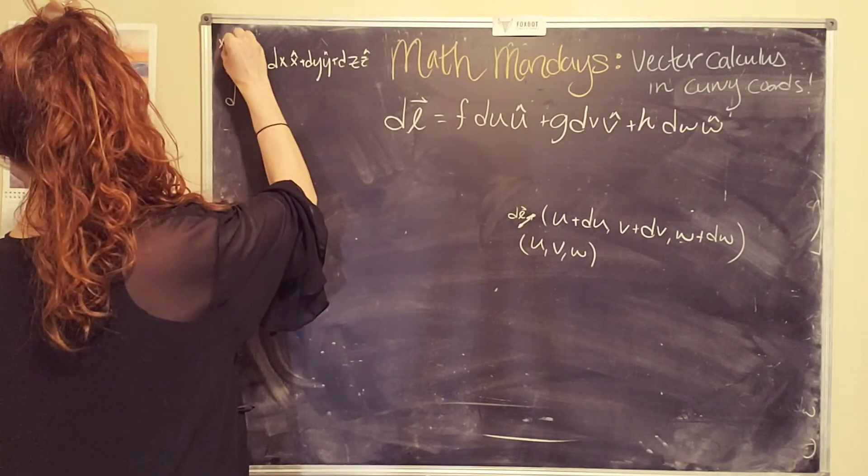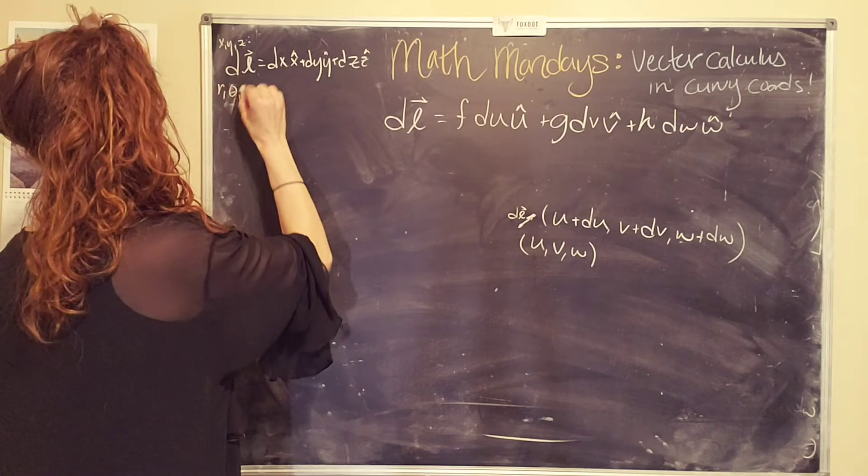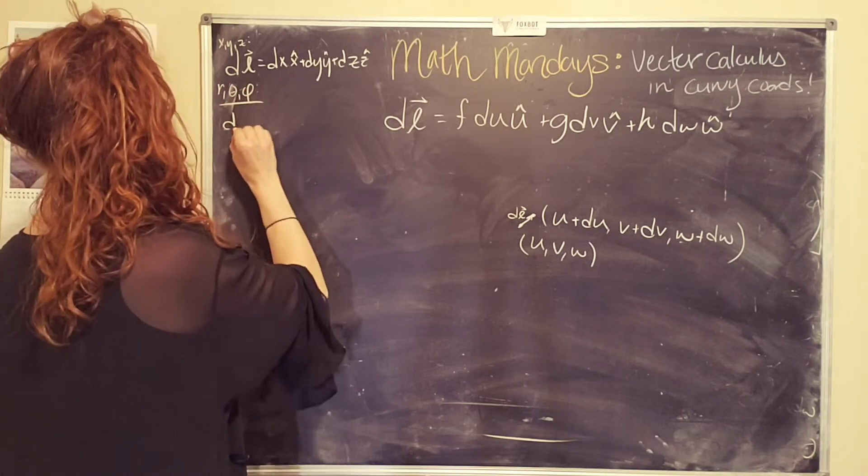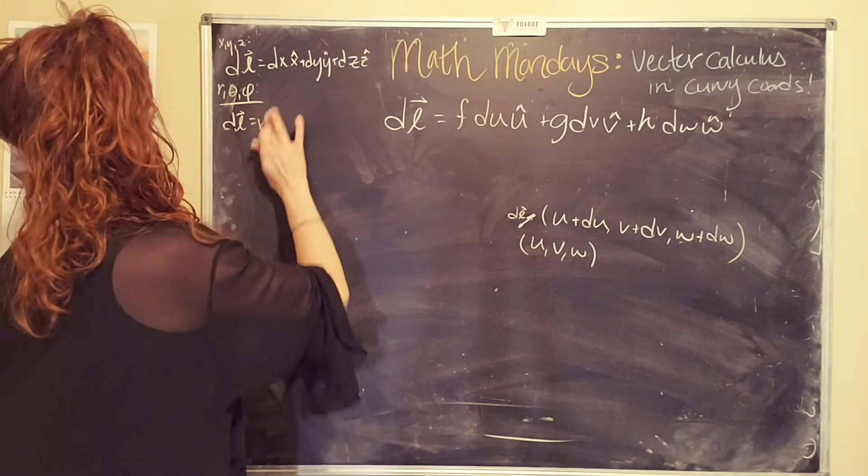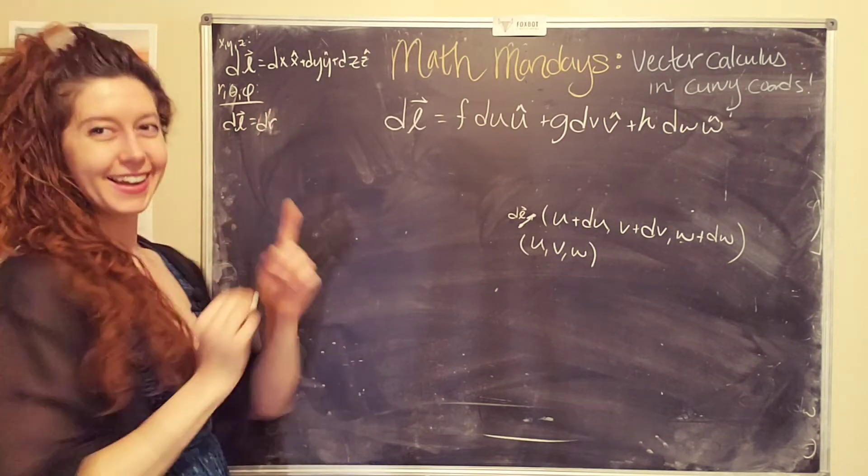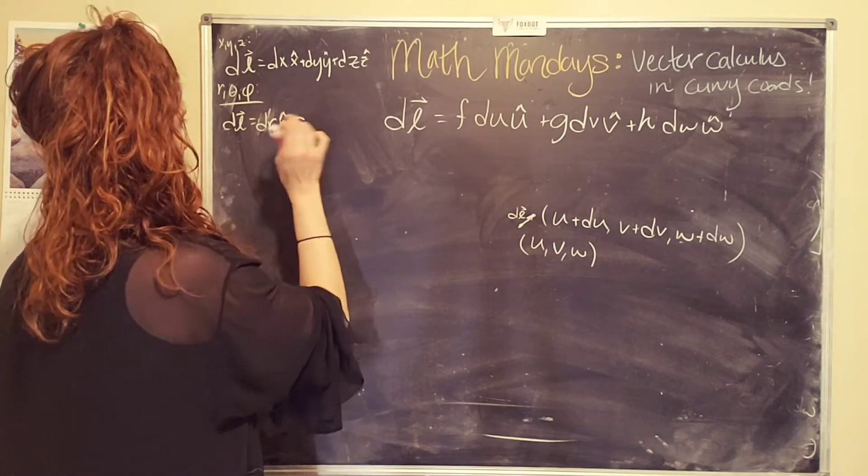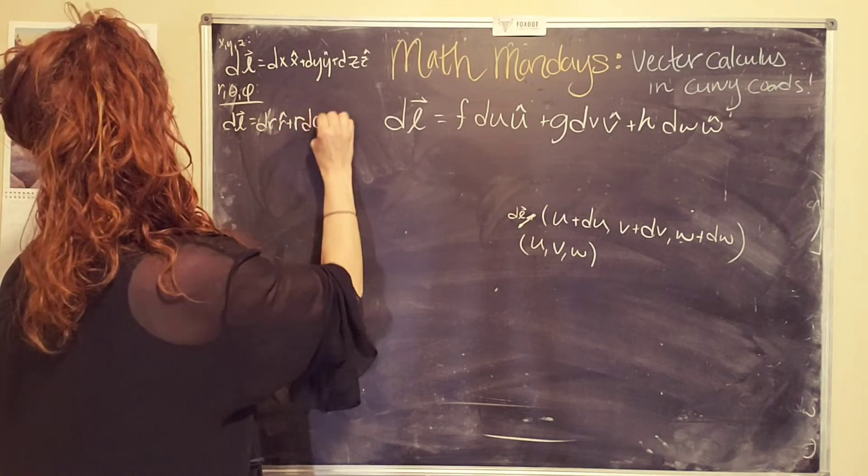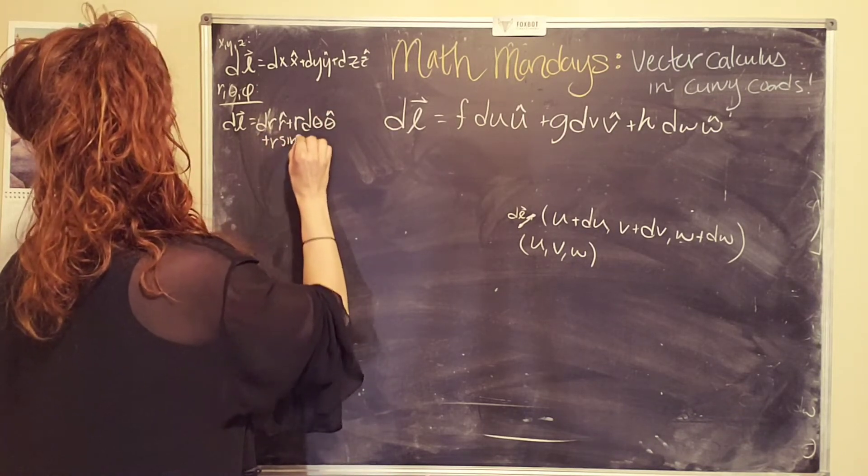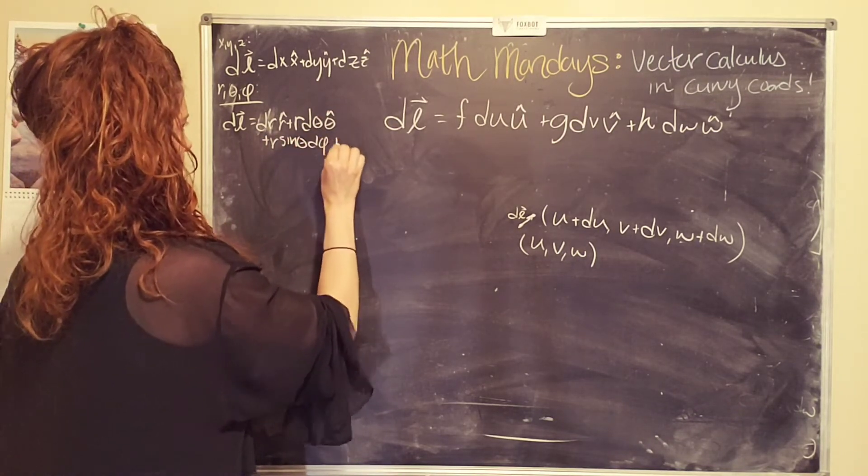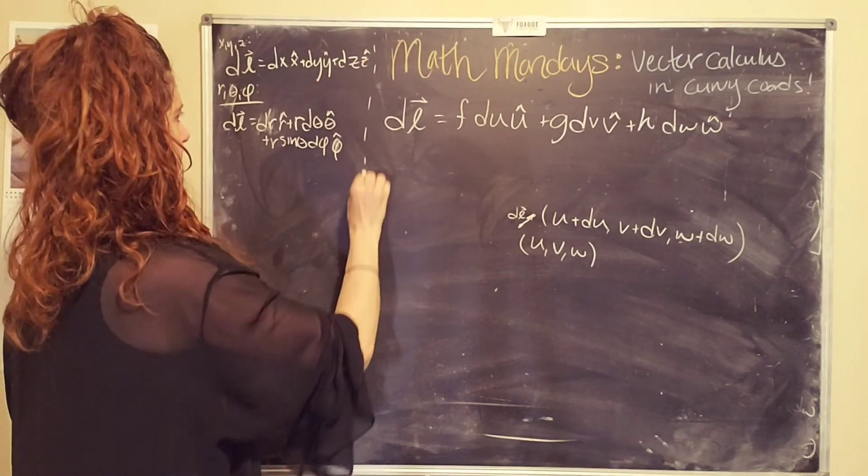And if I have r, theta, and phi, my dl is dr, r hat, plus r d theta, theta hat, plus r sine theta d phi, phi hat.